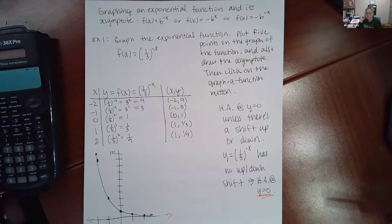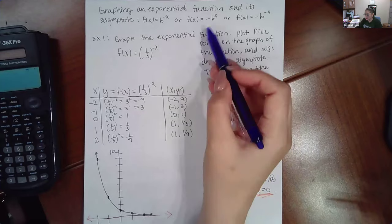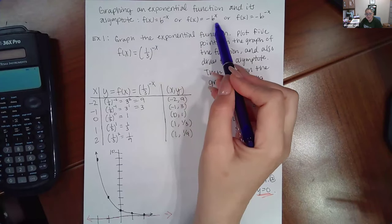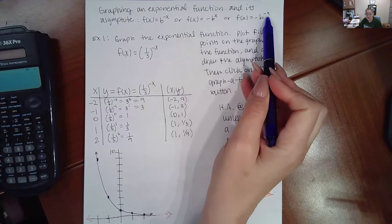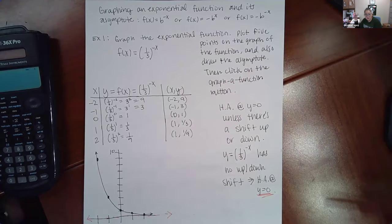So in this video we are graphing an exponential function and its asymptote. We can get any of the three forms where there's a negative in the exponent, a negative coefficient, or both a negative coefficient and a negative exponent. I do want to have examples of all three so you can see what's going on in each of these three cases.